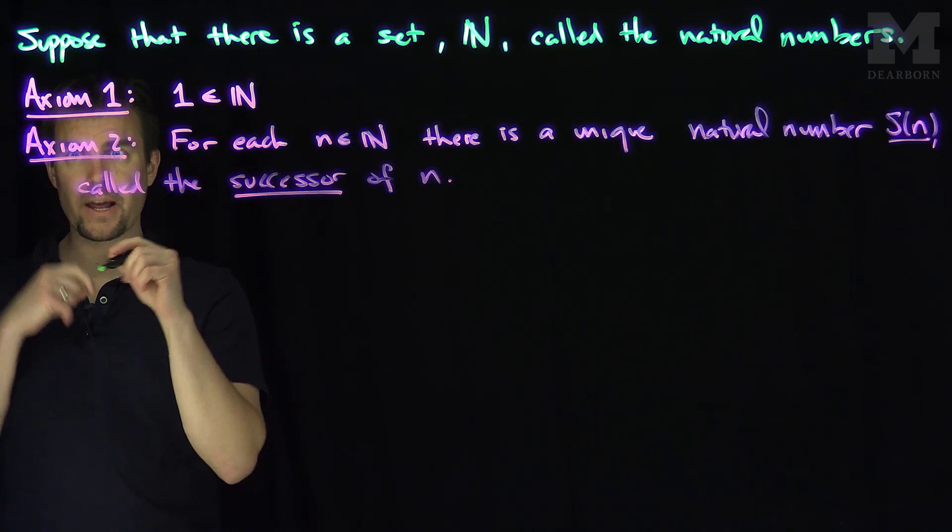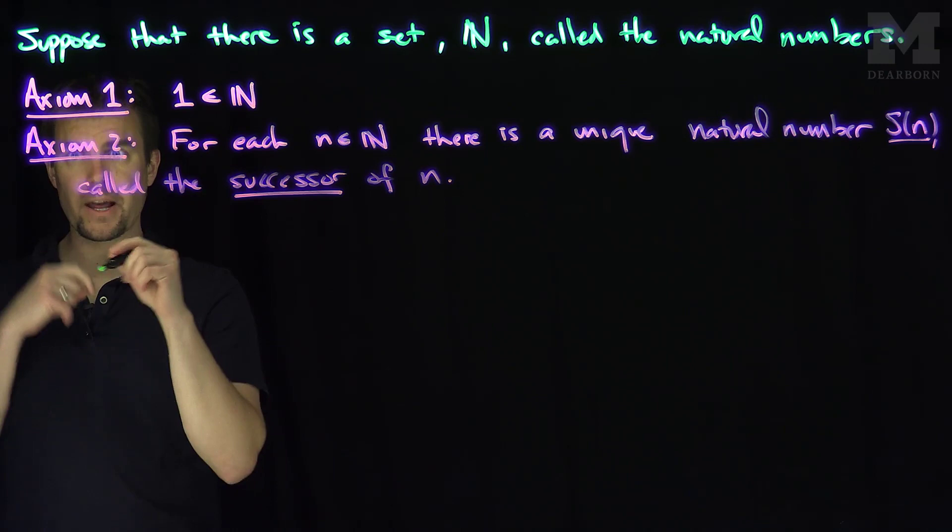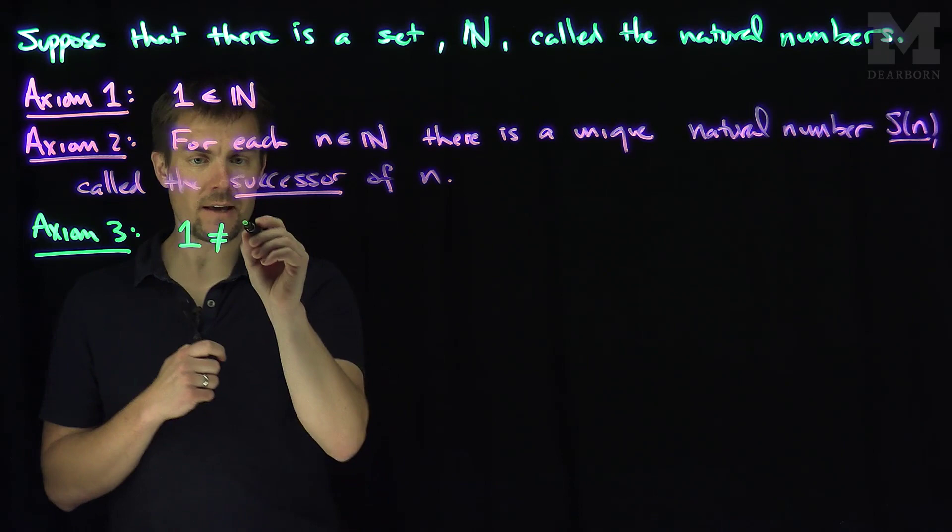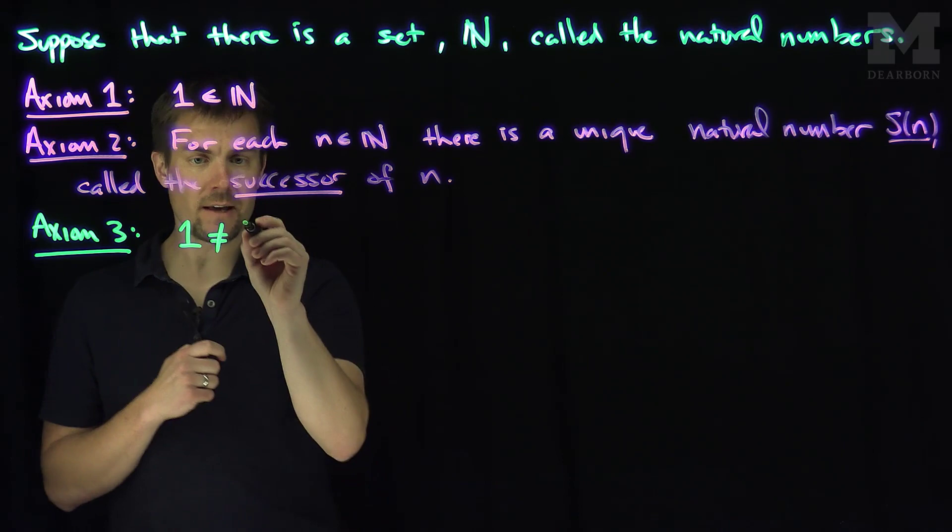The next couple axioms help us understand the successor function. Axiom 3 says that 1 is not equal to any successor S(n) for any n in N.